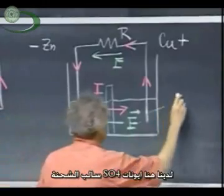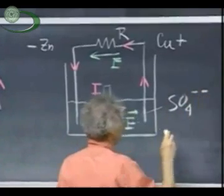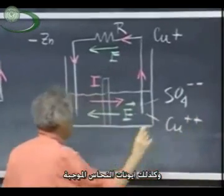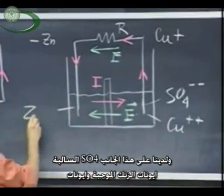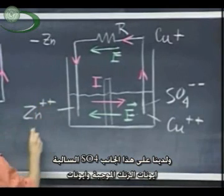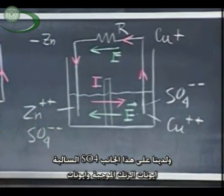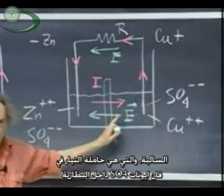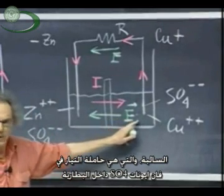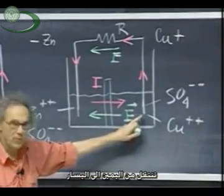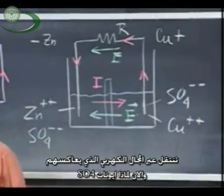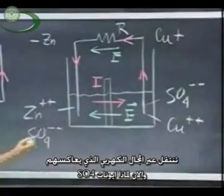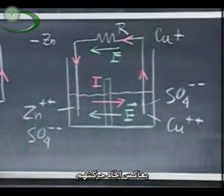You will have here SO4 minus ions, and you have copper plus ions in this solution, and here you have zinc plus, and you have SO4 minus. And as current starts to run, SO4 minus ions, which are now the current carrier inside this battery, is going from the right to the left. Now why would SO4 minus ions travel through an electric field that opposes them, that opposes their motion?